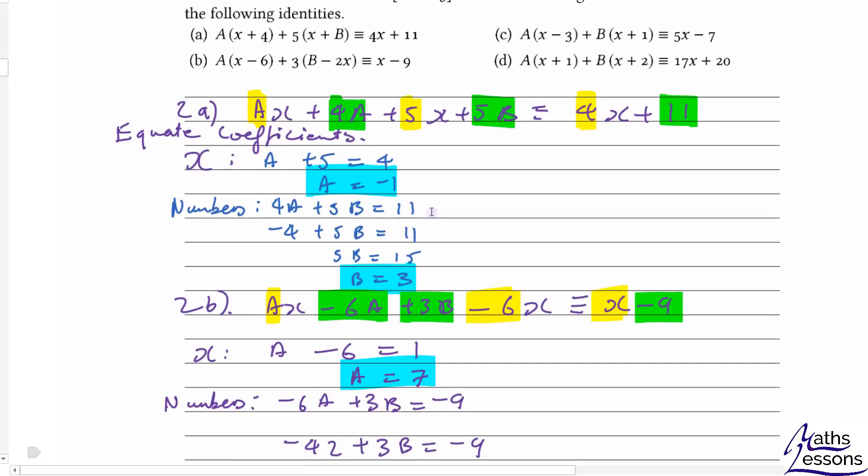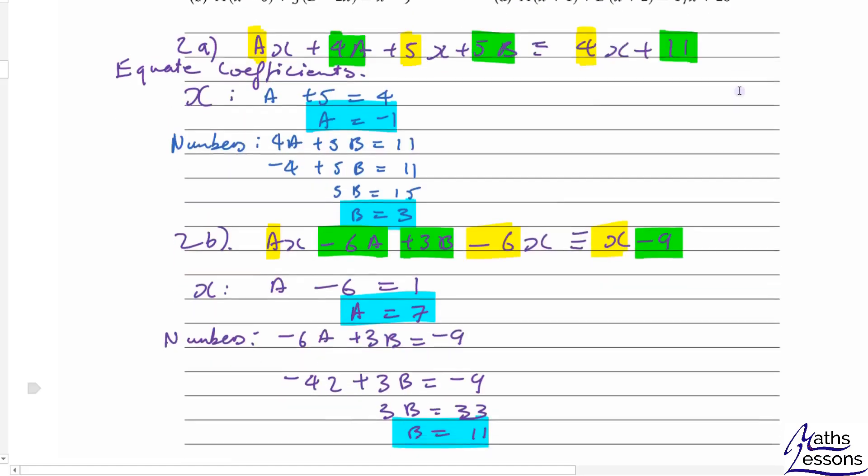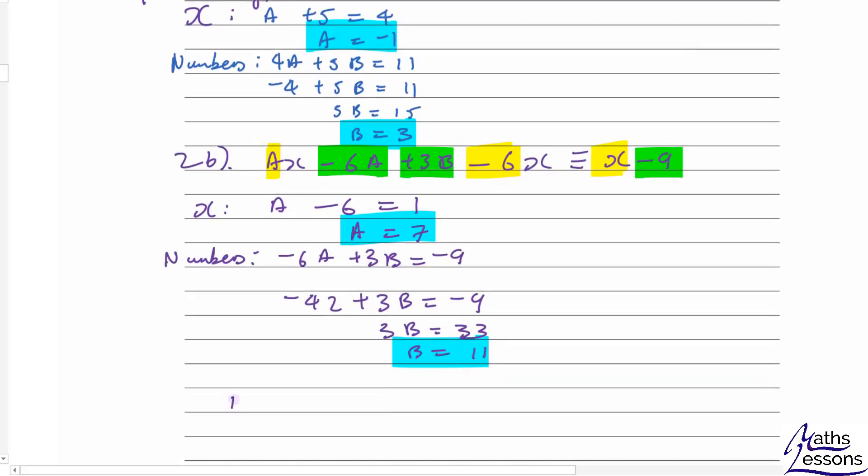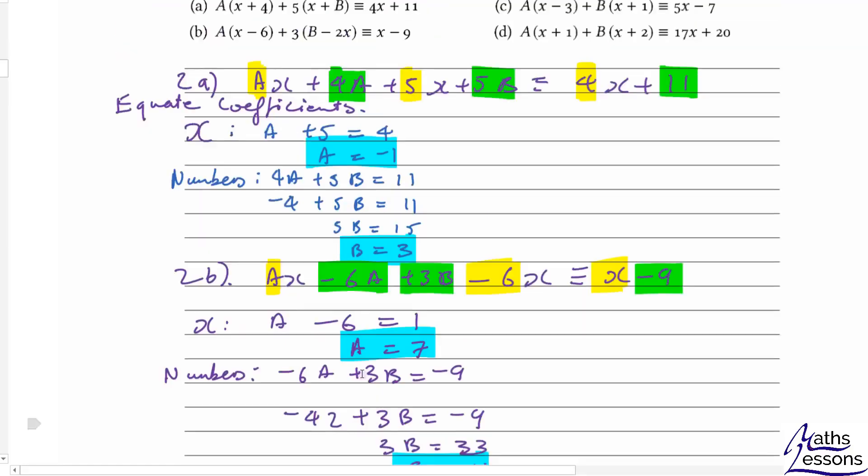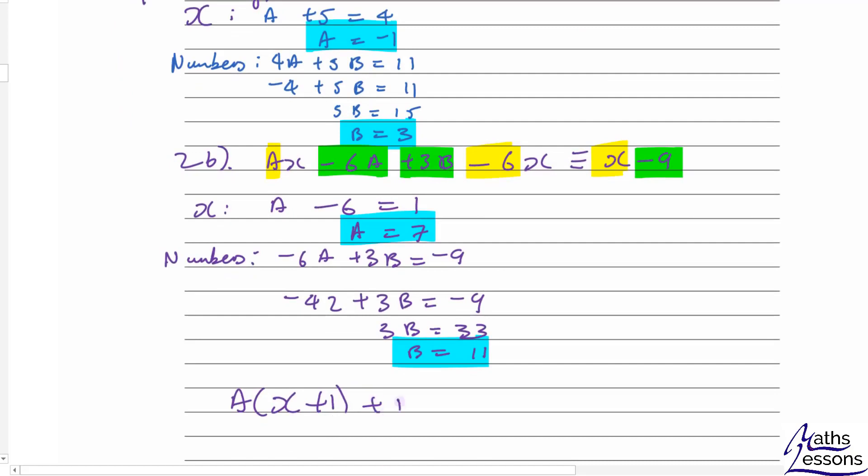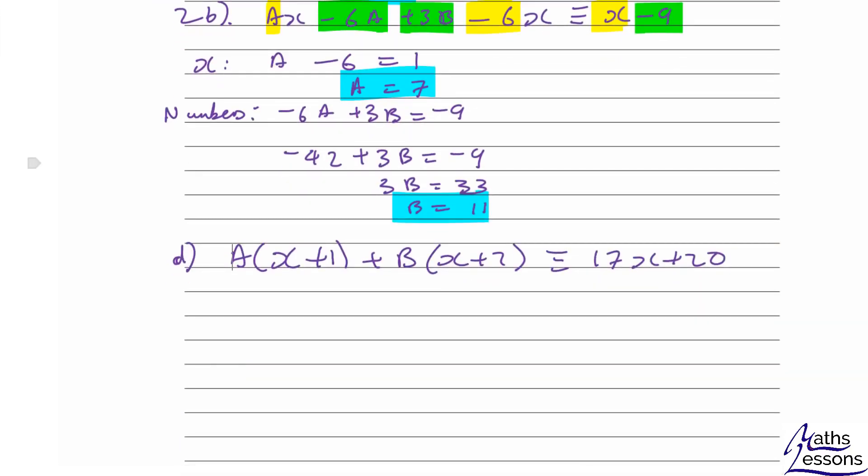Now let's jump to the hardest one, the last one. Let's look at d. This is d we're doing now: ax plus 1 and bx plus 2. Let's multiply that out, so we get ax plus a plus bx plus 2b equals 17x plus 20.